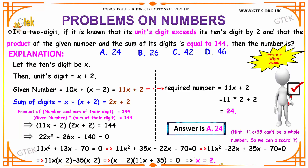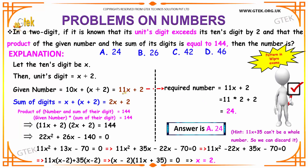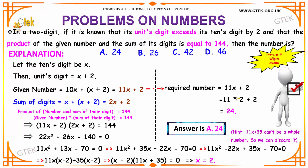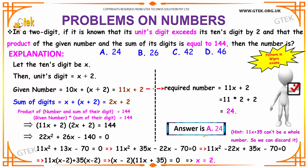So, our value is x is equal to 2. We have got our x value. The required number can be obtained by substituting your x value in the given number. That is, 2 into 11 plus 2, that is nothing but 22 plus 2, which is equal to 24. Hence, option A — 24 — is your answer.